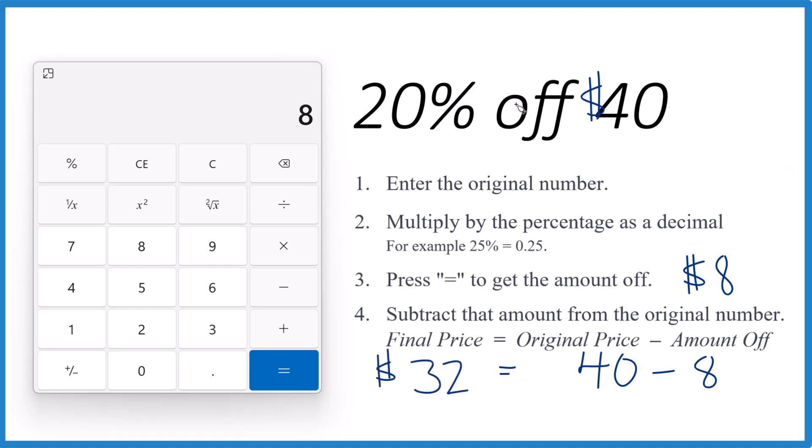So, when you take 20% off $40, it's $32. That's how much you pay.